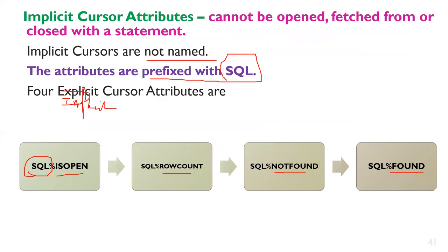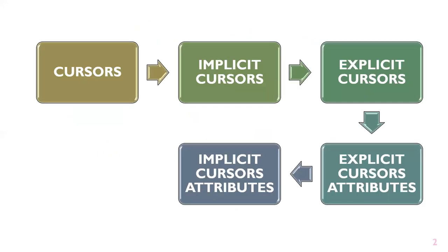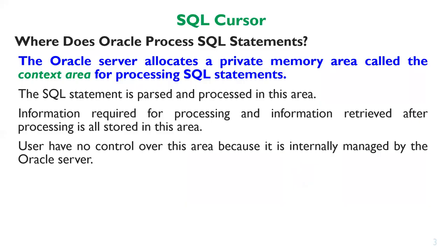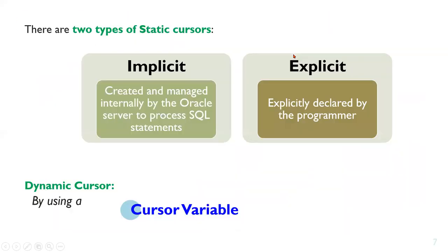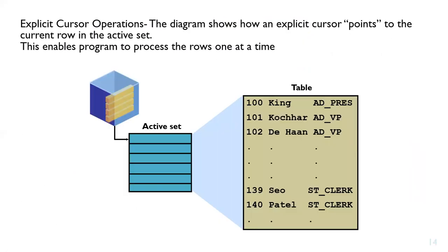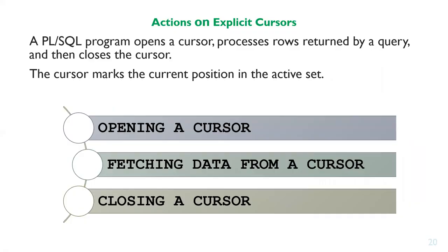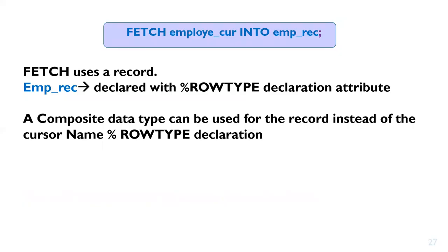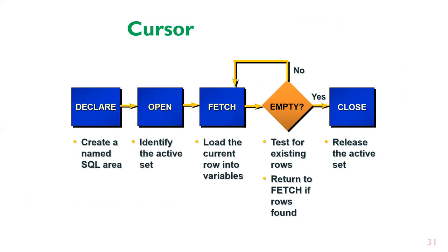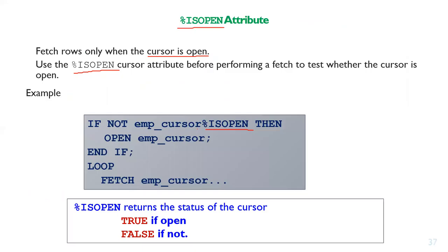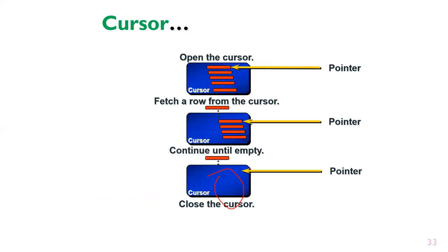In summary, the cursor chapter's first part covered: what is a cursor, what is an implicit cursor, what is an explicit cursor, and both implicit and explicit cursor attributes. Explicit cursor attributes include: %ISOPEN, %FOUND, %NOTFOUND, and %ROWCOUNT. Cursor operations are declare, open, fetch, and close. These are the topics covered in the first part of the cursor introduction.